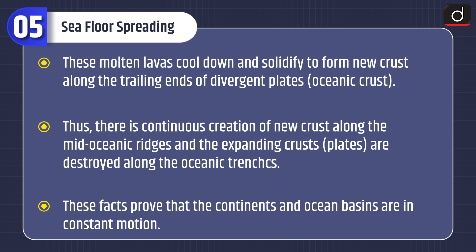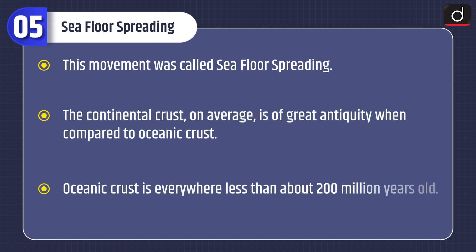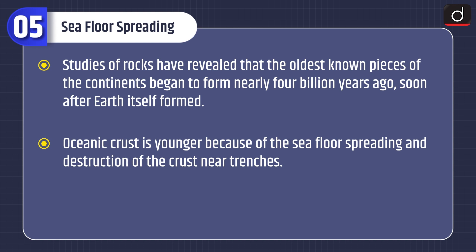These facts prove that the continents and ocean basins are in constant motion — this movement was called seafloor spreading. The continental crust on average is of great antiquity when compared to oceanic crust. Oceanic crust is everywhere less than about 200 million years old. Studies of rocks have revealed that the oldest known pieces of the continents began to form nearly 4 billion years ago, soon after the Earth itself formed. Oceanic crust is younger because of seafloor spreading and the destruction of the crust near trenches.